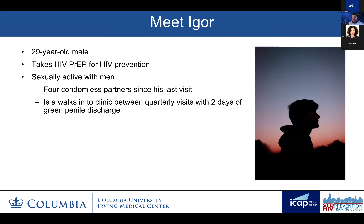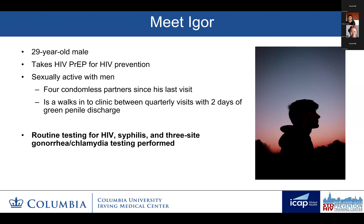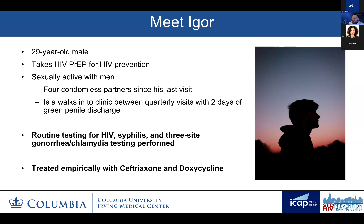I always like to have a case to set the stage, and this case is based on a real patient who's come through our sexual health program recently. This is Igor, a 29-year-old male living in New York City, who's in our program taking HIV PrEP for HIV prevention. He's sexually active with men and had four condomless partners since his last visit. He walked into clinic between his regular quarterly appointments with two days of green penile discharge. We did our routine workup, which includes testing for HIV, syphilis, and three-site gonorrhea and chlamydia testing. We treated him empirically with IM ceftriaxone and oral doxycycline, as per the 2021 update to the CDC guidelines.